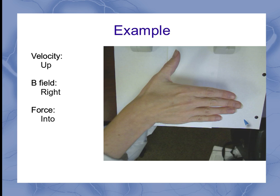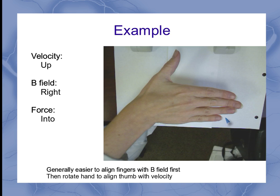Now note, when you actually start trying to align your hand, it's generally easier to align your fingers with the B field first, and then rotate your hand around your wrist, just keeping your fingers in the same direction, until your thumb is aligned with the velocity.